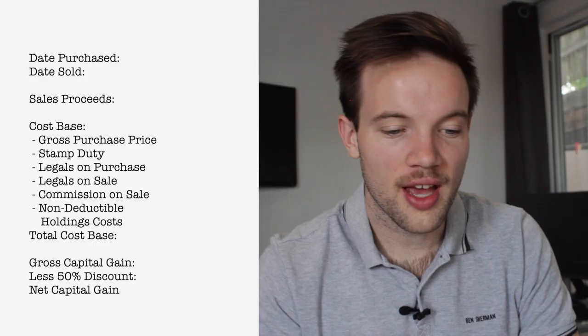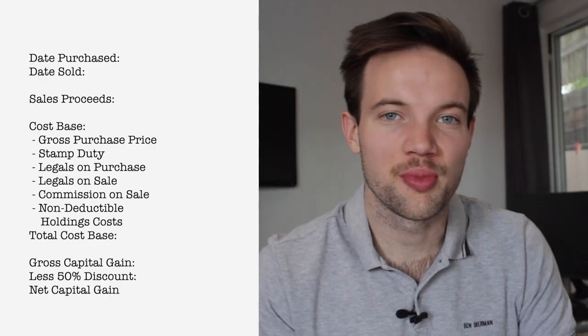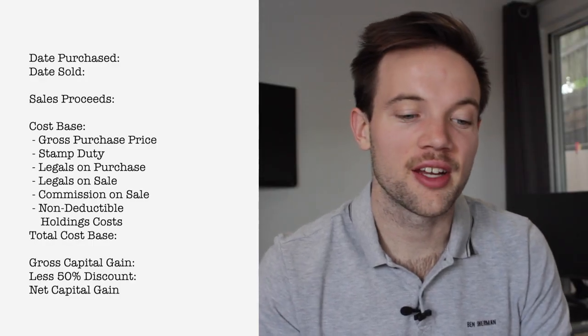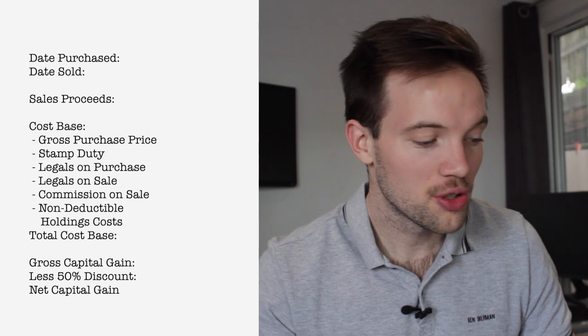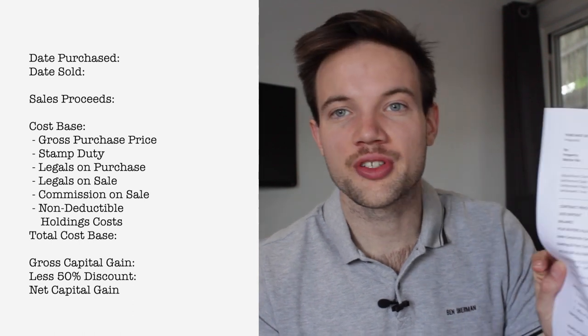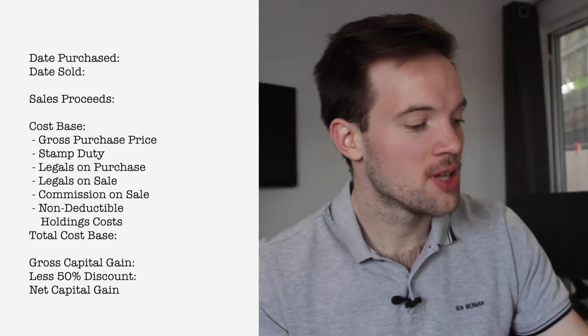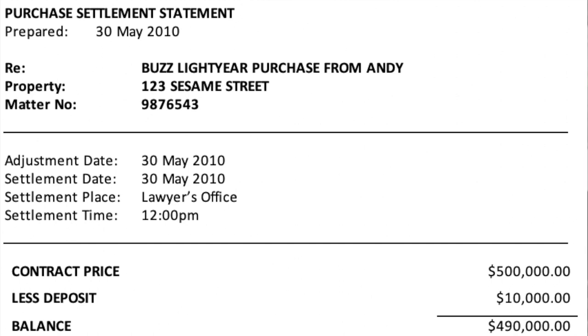I've made up two settlement statements that we're going to use to calculate our capital gains tax — one on the purchase side and one on the sale side. The first thing we need to enter into the calculator is the date purchased. You can find that on your purchase settlement statement — it's the settlement date at the top. In our example that's the 30th of May 2010.